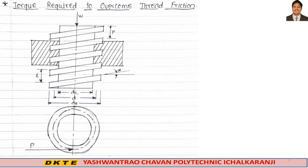Torque required to overcome thread friction: when the weight is applied, when lifting and lowering against the thread friction, a torque is applied. When the torque is applied, the thread friction will be overcome.